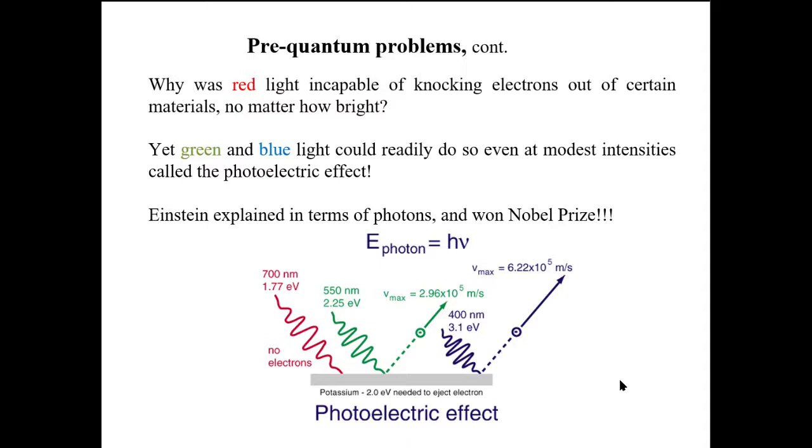But if it is shined by green or blue light, the modest intensities of light also are capable of knocking out the electron from the surface. This behavior cannot be explained by classical mechanics where light is a wave. Because more intense light means more energetic light wave irrespective of its frequency.